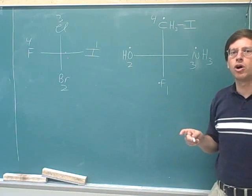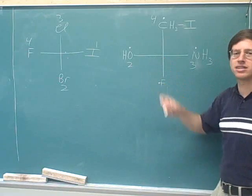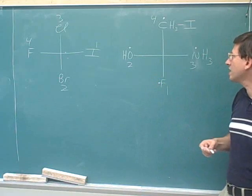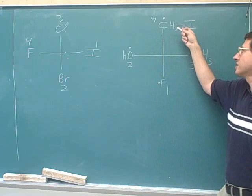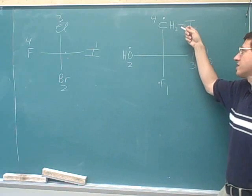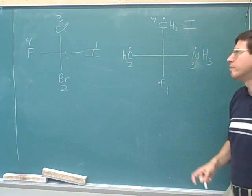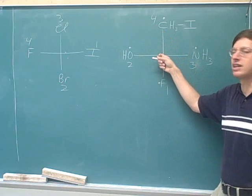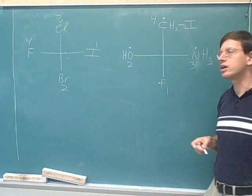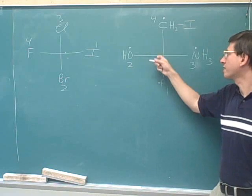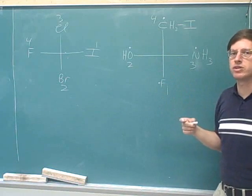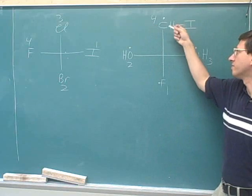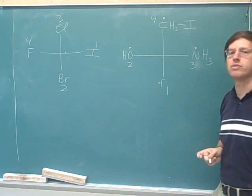Notice how crucial it is that we only compare atoms directly connected to the stereocenter. If we let our eyes stray to atoms further away, it might seem like the carbon should be the highest priority because it's attached to an iodine with a high atomic number. But there was never any reason to look at the iodine — the carbon is the atom directly connected to the stereocenter. So don't let your decision be swayed by atoms further away; the carbon remains the lowest priority even though it's attached to an iodine one step out.